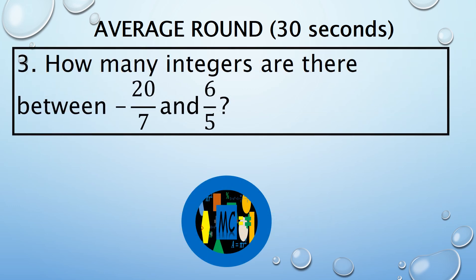3. How many integers are there between negative 20 over 7 and 6 over 5?